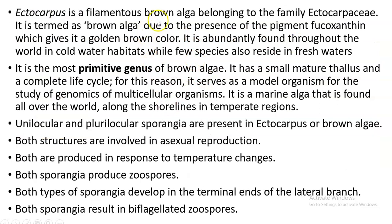Ectocarpus is a brown alga because it has a pigment called fucoxanthin. Though it has chlorophyll a and c, the green color is masked by the dominance of fucoxanthin, which is a golden-brown color. More than 100 species are reported worldwide, of which around 16 species are found in India. It is mainly distributed in the western coast of India, for example Ectocarpus indicus and Ectocarpus conferoides. The latter is predominantly lithophytic, attached to the rocky substratum.